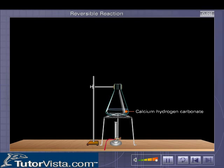Now let us see what happens when we boil this clear solution of calcium hydrogen carbonate. We can observe that the clear solution is now gradually turning milky. Why does this happen?